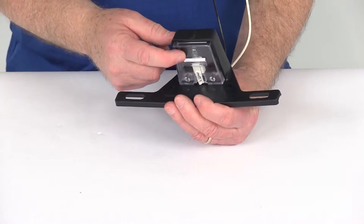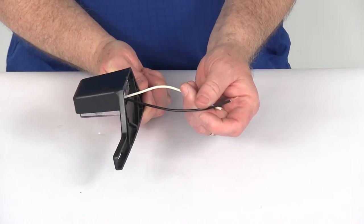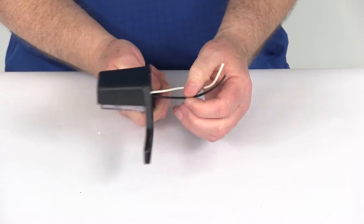It does include the number 168 light bulb in there. If you notice, it does have two wires coming out the back. Basically, white is for ground, black is for power to it.